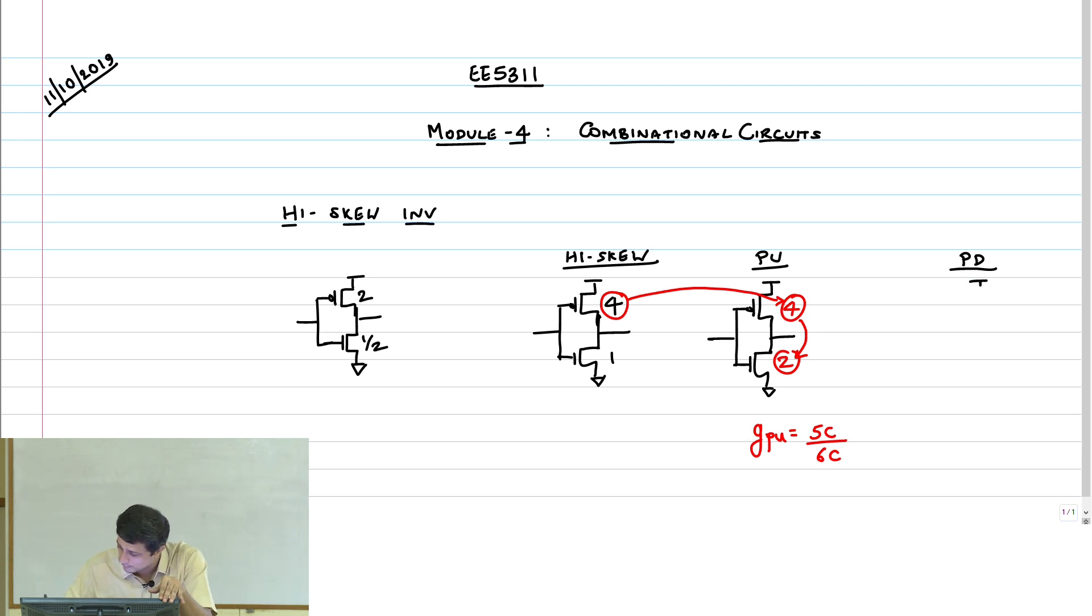What about pull-down? This is my reference inverter. What I am going to do is this 1 will appear here. If this is 1, what should be the PMOS? 2. And therefore, I get logical effort pull-down equals 5 by 2. This is what we got yesterday, right? 5 by 6 and 5 by 3. Clearly the pull-down is greater than 1, pull-up has been made less than 1.